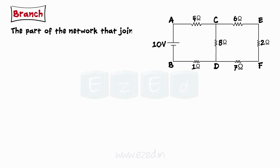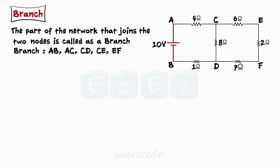The part of network that joins the two nodes is called as a branch. Thus, we have different branches as AB, AC, CD, DE and EF.